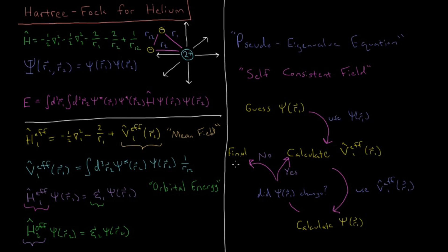Once the wave function stops changing, we have our final converged wave function. The self-consistent part means we repeat the cycle until both the mean field and the wave function remain the same from one iteration to the next. This gives us the effective one-particle Hamiltonian for each electron, the electron orbitals, and their orbital energies. This procedure forms the basis of how we will treat many-electron atoms and eventually molecules going forward.